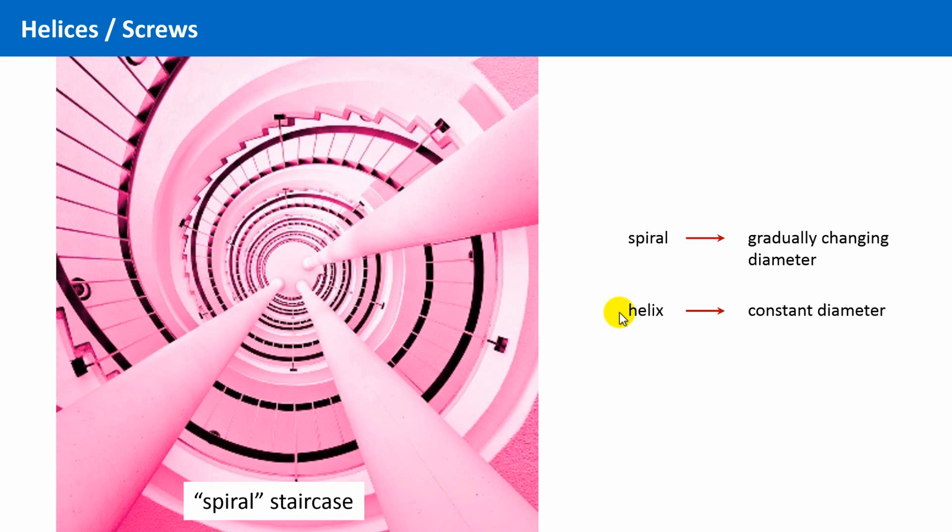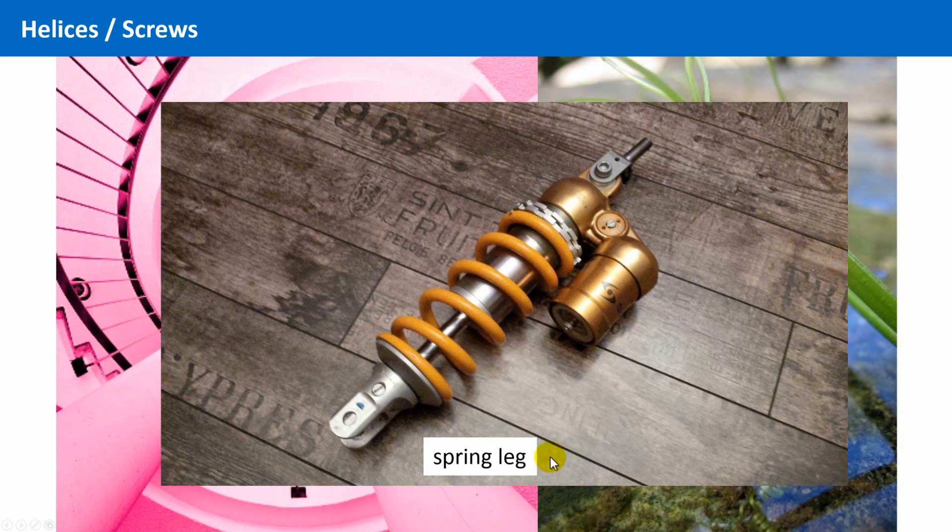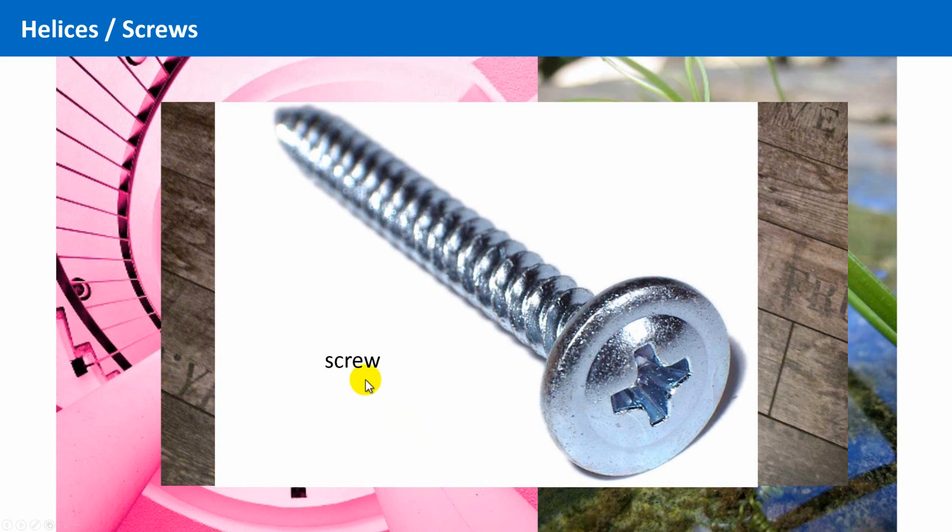In contrast, for instance, pigtails or such climbers, we see here a young sprout of a vine plant, have indeed spiral structures with gradually changing diameters. Objects with helical structure are also widespread in technology. For example, as shown here, a coil spring. And screws have, of course, helical symmetry as well.